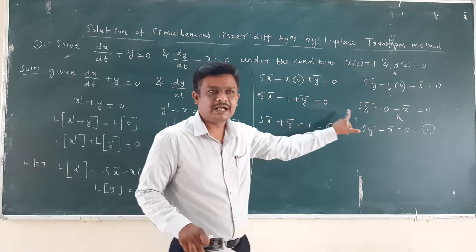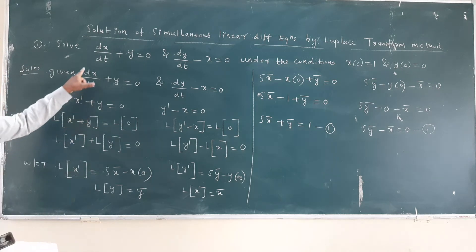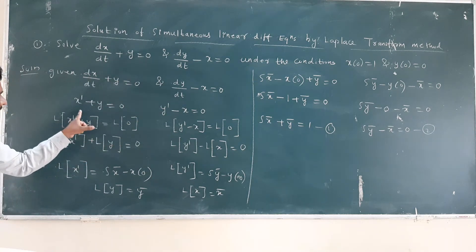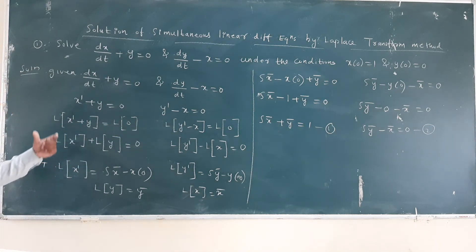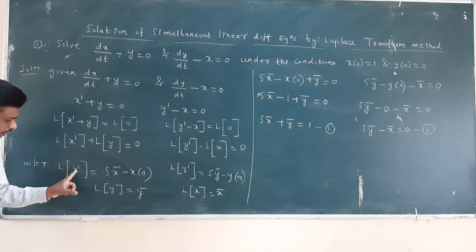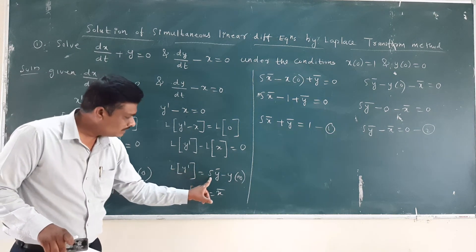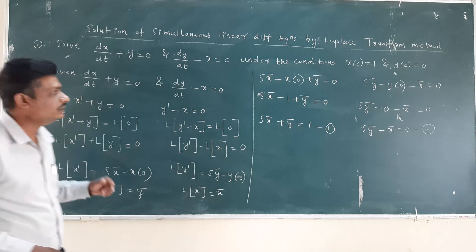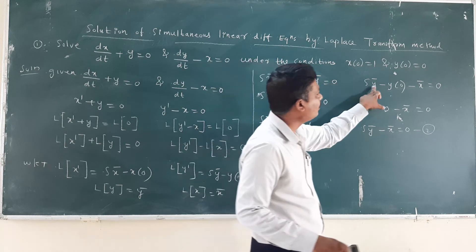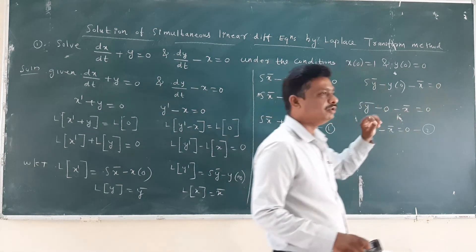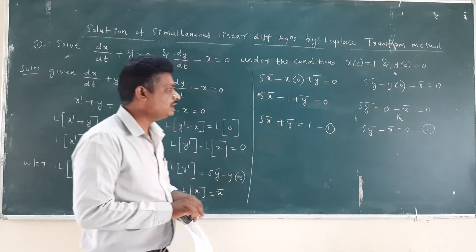So I will solve these two equations simultaneously and find the value of X̄ and Ȳ. To recap: I wrote the differential equations in operator form, applied Laplace on both sides, used L{x'} = s·X̄ - x(0), applied initial conditions to get s·X̄ - 1 + Ȳ = 0 and s·Ȳ - X̄ = 0.